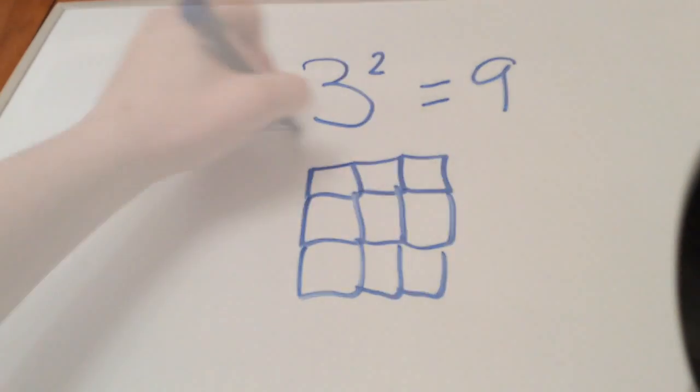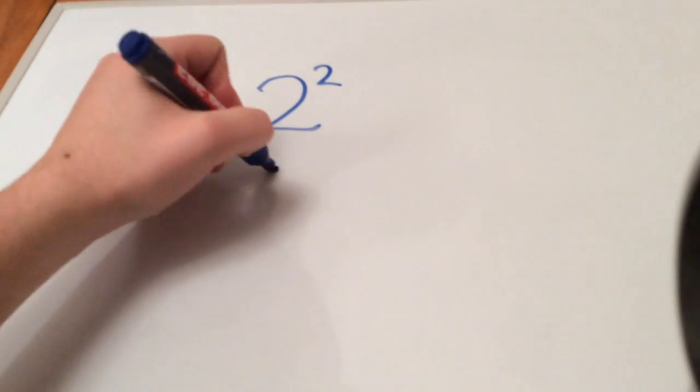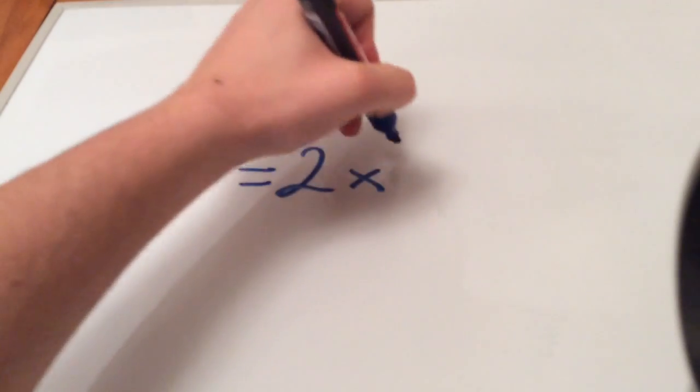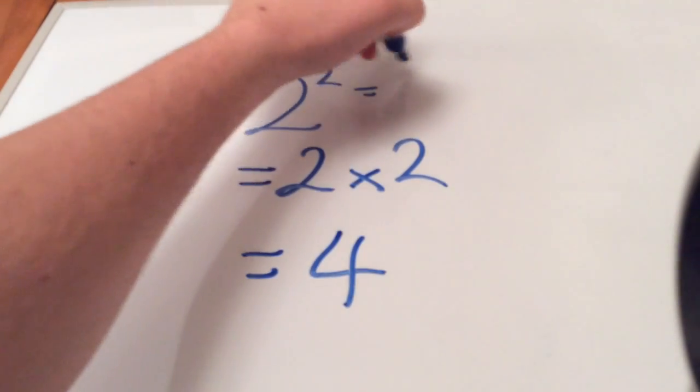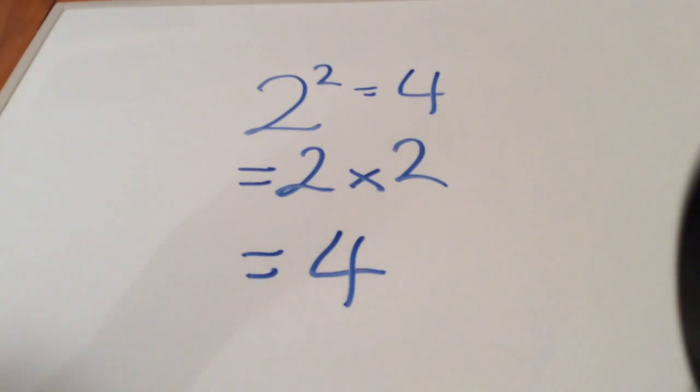2 squared equals—this is the same as 2 times 2, and we know that is 4. So 2 squared equals 4. Now if I had 4 blocks, I can make a square out of those blocks, so that way I know that it's a squared number.